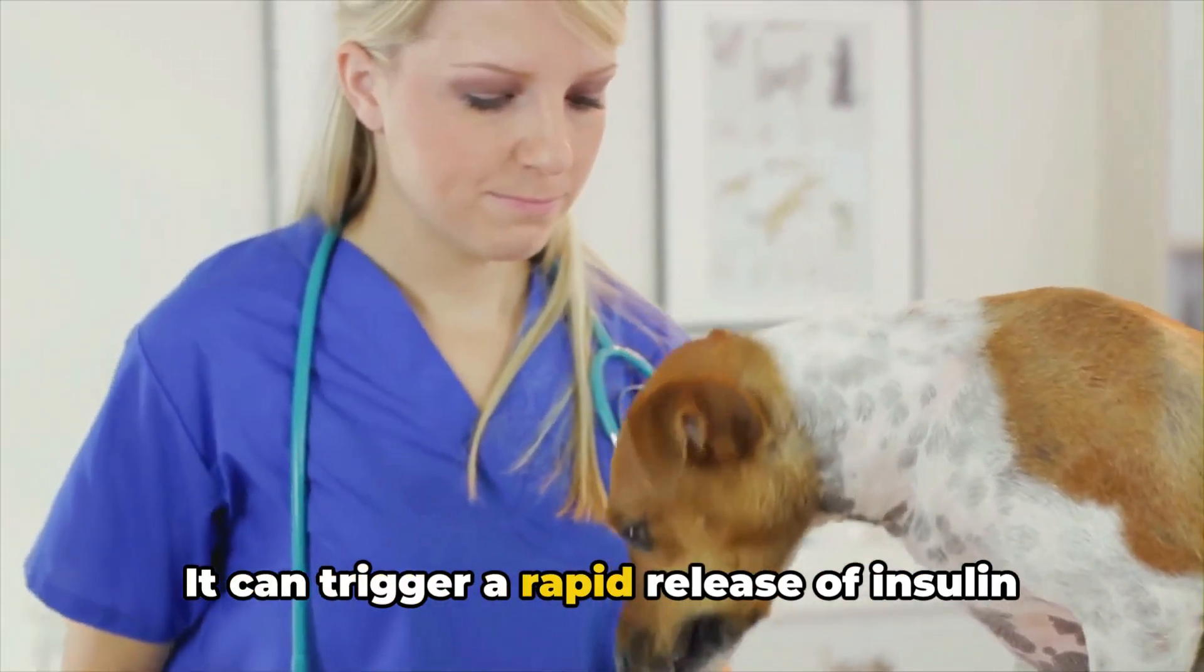While nutritious for humans, some health foods can be harmful to dogs. You may love munching on grapes and raisins as a refreshing snack, but these seemingly innocent fruits can cause kidney failure in dogs. It's not just a matter of a tummy ache, it's a serious risk. Even a small amount can make a dog ill, and the severity is often dependent on the dog's size, age, and overall health.